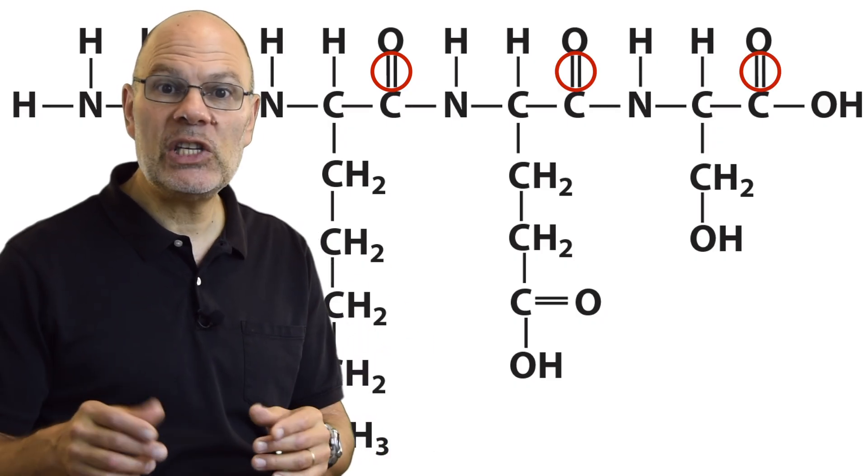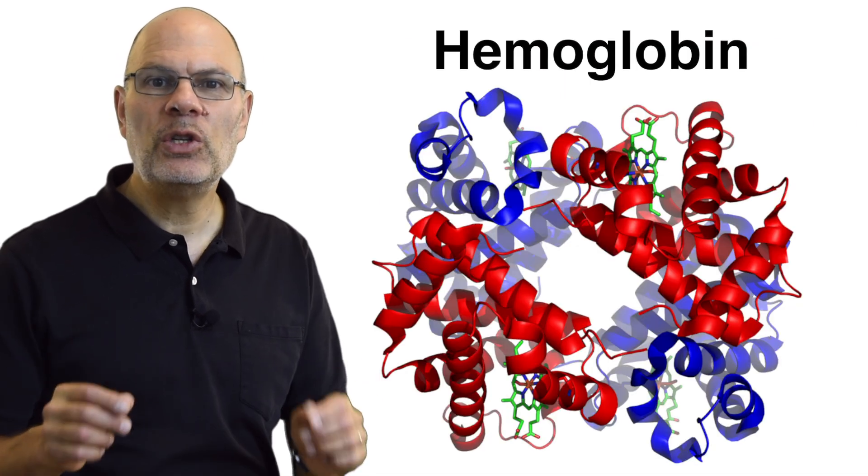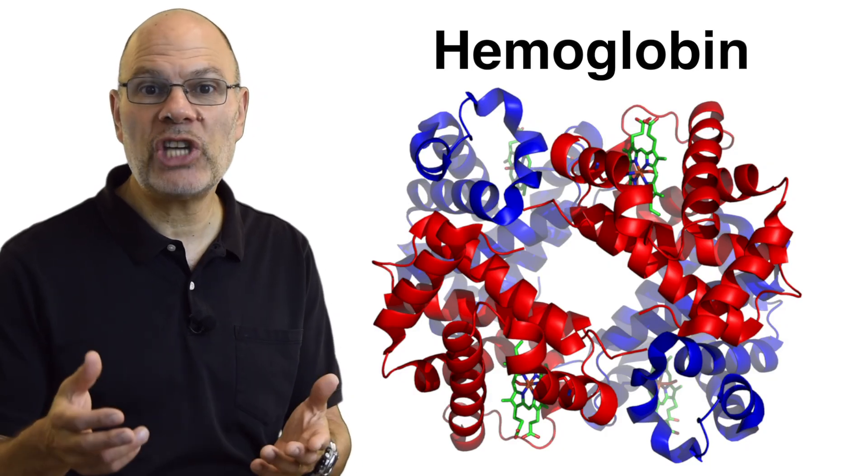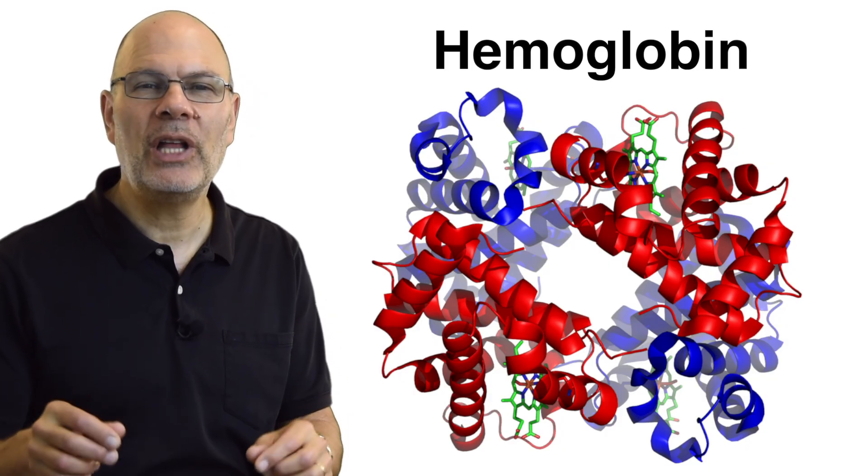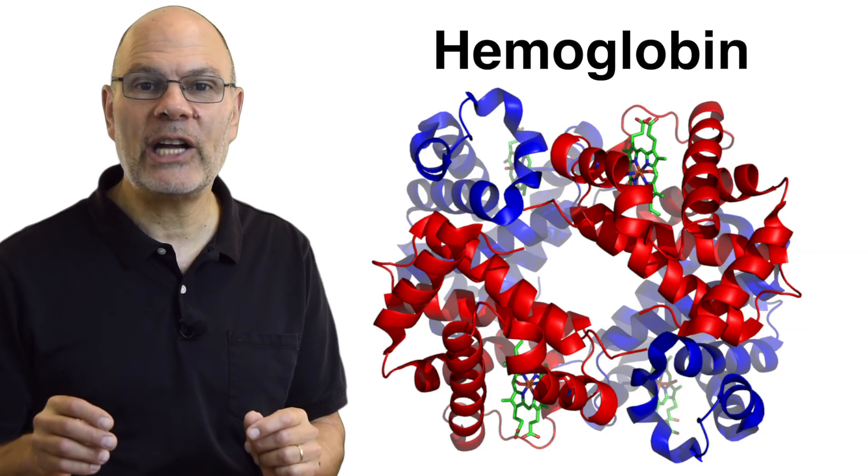It's the basis for one of the chemical interactions that causes this protein, hemoglobin, to fold up into its specific shape, and that makes its function, which is carrying oxygen, possible. It all comes down to carbon and its four valence electrons.